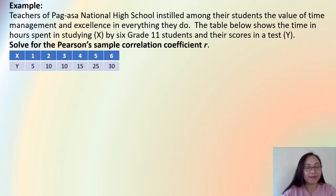So let's look at this example. Teachers of Pag-Asa National High School instilled among their students the value of time management and excellence in everything they do. The table below shows the time in hours spent in studying, represented by X, by 6 grade 11 students and their scores in a test, which is represented by Y. Our task is to solve for the Pearson Sample Correlation Coefficient R. So we have here the table. X represents the number of hours the students spent in studying, and Y here represents the score of the students.